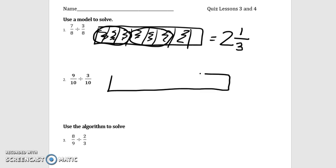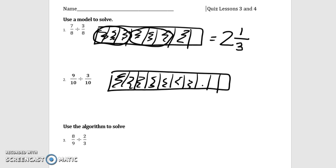All right. So nine tenths divided by three tenths. So again, we're going to draw out nine tenths. One, two, three, four, five, six, seven, eight, nine, and then ten. So I shaded nine of them. One, two, three, four, five, six, seven, eight, nine.